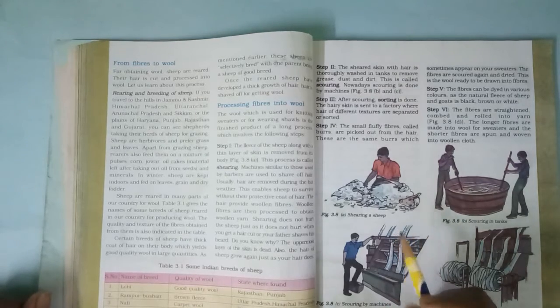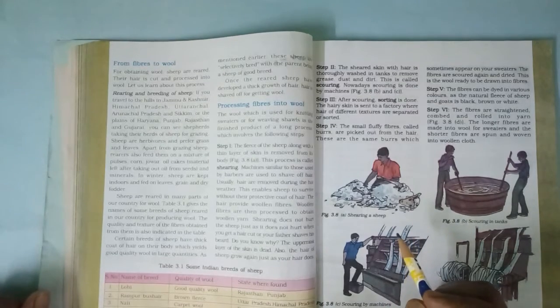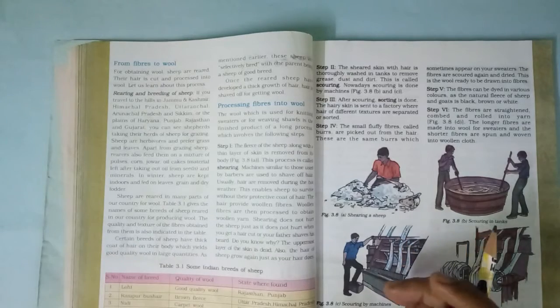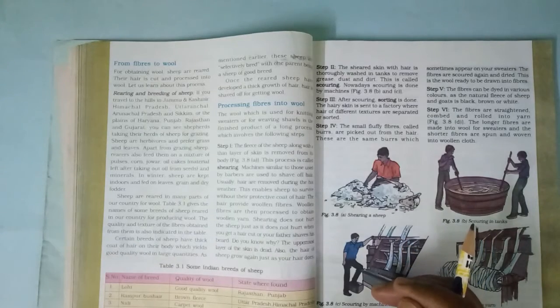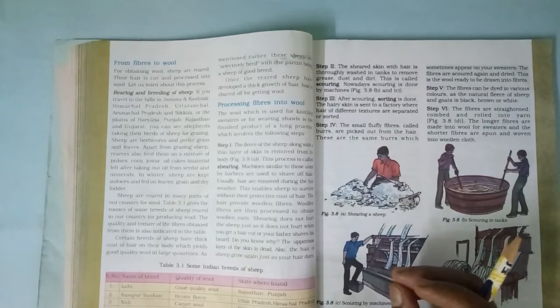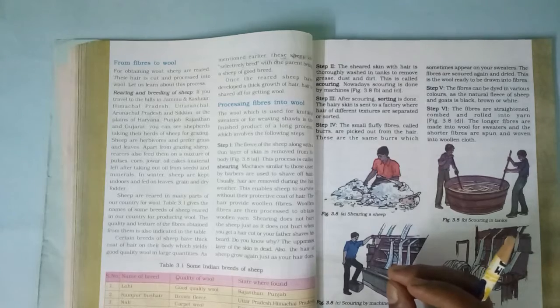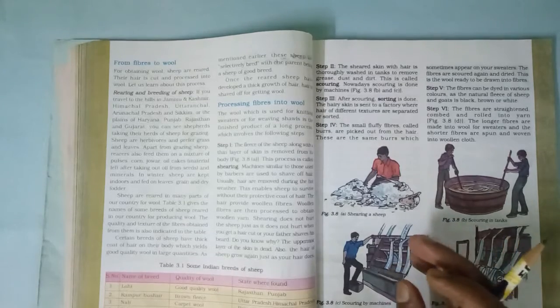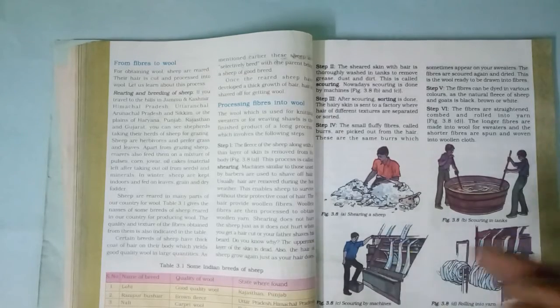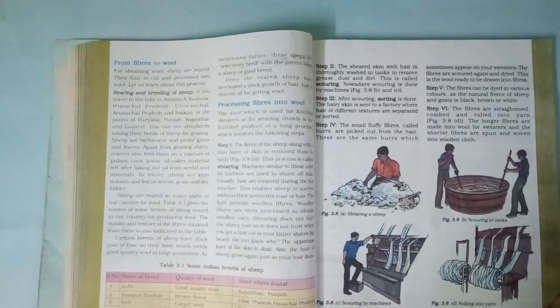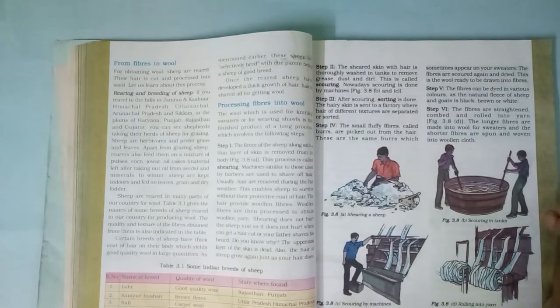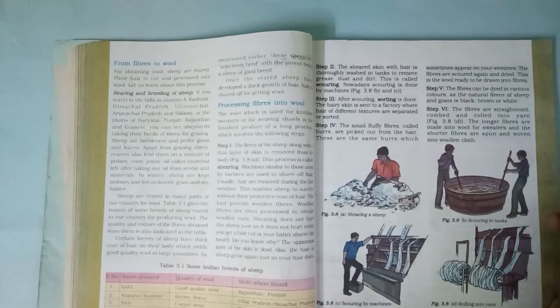This is seventh standard science class and we are dealing with the chapter Fiber to Fabric. Children, in the previous class we finished learning about different sources of fur from animals which give us wool apart from sheep and goat, the regions or parts of our country where they are available, different localities, their names, and some activities.